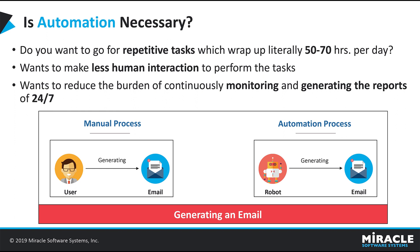We have two processes: manual and automation. In manual, the user generates an email, and in automation, the robot generates an email. If a user wants to generate a single email, we go for the manual process. But if the user wants to generate multiple emails, we go for the automation process, which greatly reduces time. As we know, we mainly focus on less time and less work, and those can be achieved using automation.